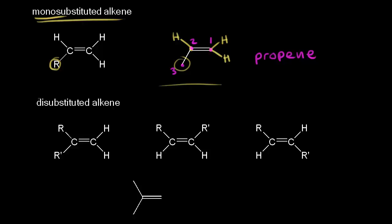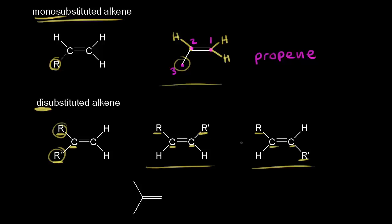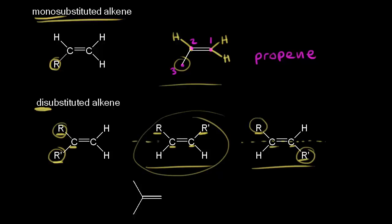Next, let's look at a disubstituted alkene — two R groups, R and R prime, which may be the same or different. R and R prime can be on the same carbon, or it's possible to have them bonded to different carbons. Note the difference: these two R groups can be on opposite sides of the double bond, or both R groups can be on the same side. These don't rotate into each other because there's no free rotation around a double bond.